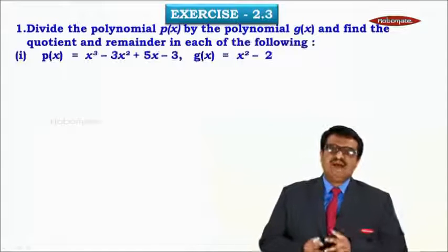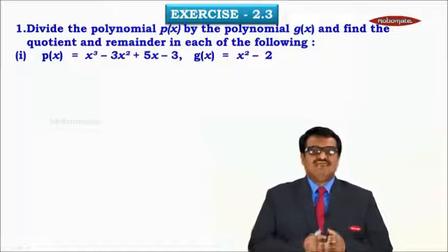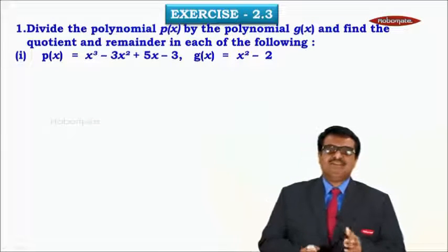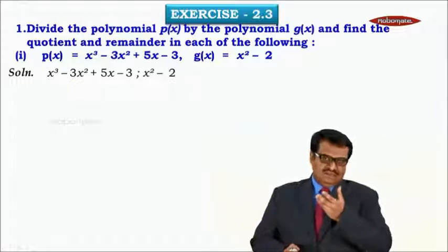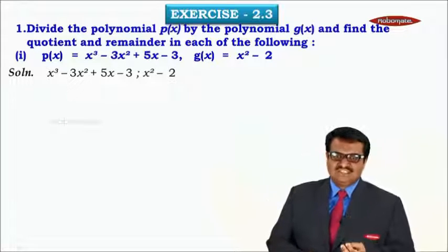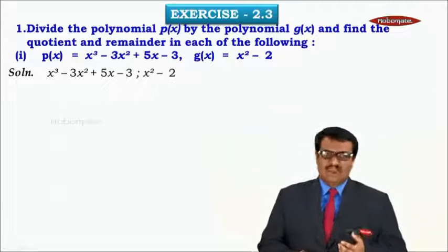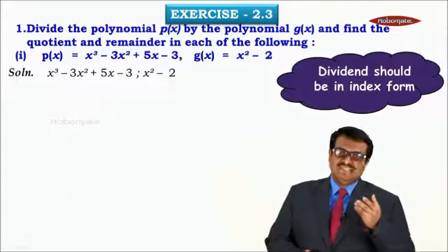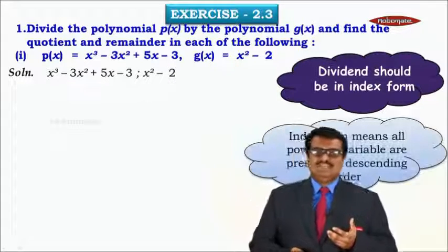Exercise: Divide the polynomial p(x) by the polynomial g(x) and find the quotient and the remainder in each of the following. They have given two polynomials and we have to divide them. Solution: The first polynomial is x³ minus 3x² plus 5x minus 3, and the second polynomial is x² minus 2. The dividend should be in index form.